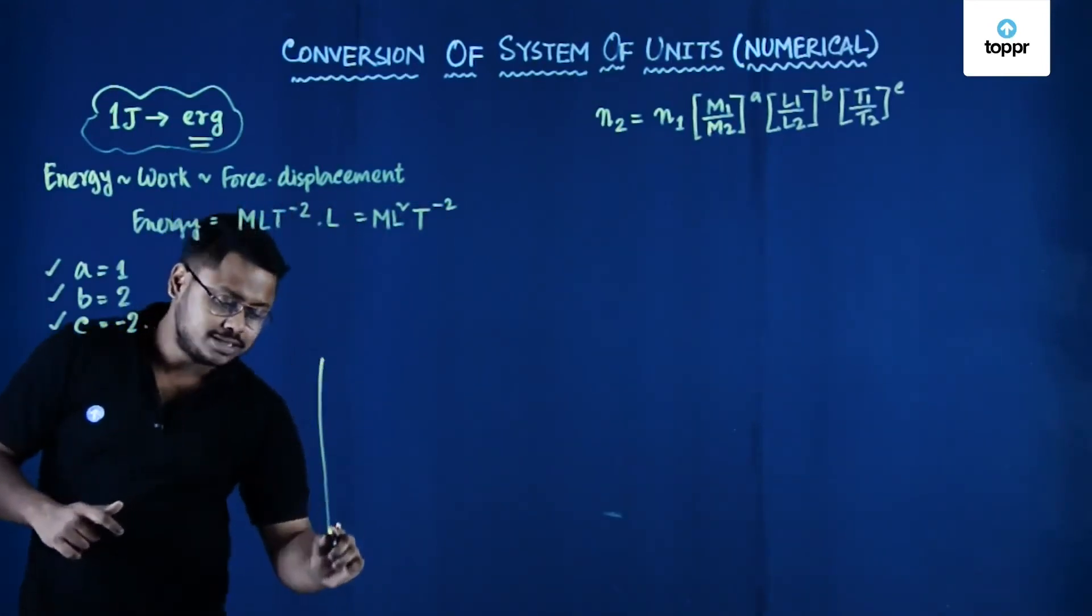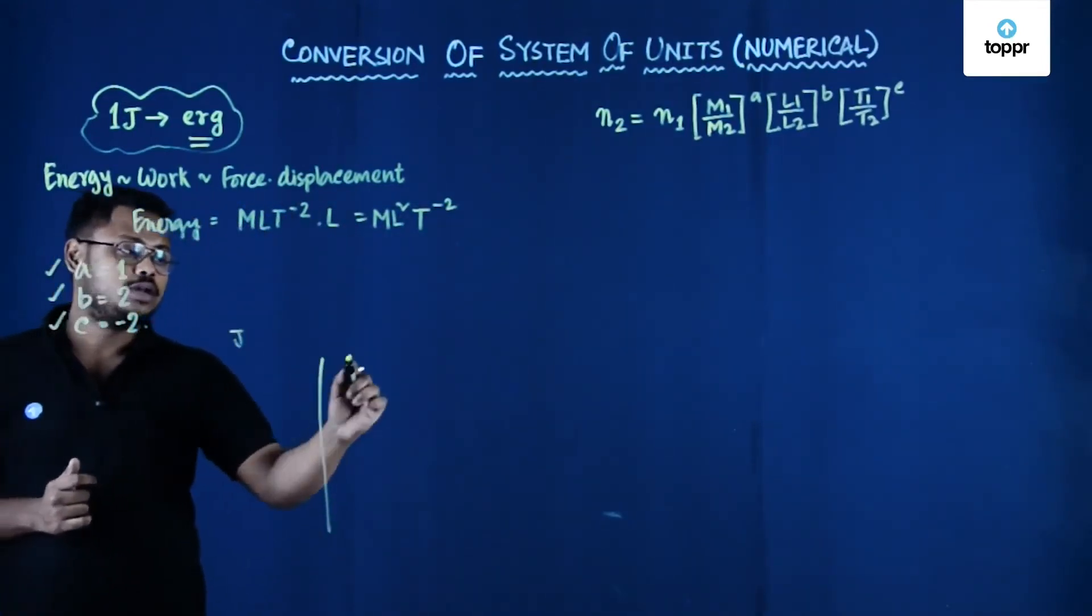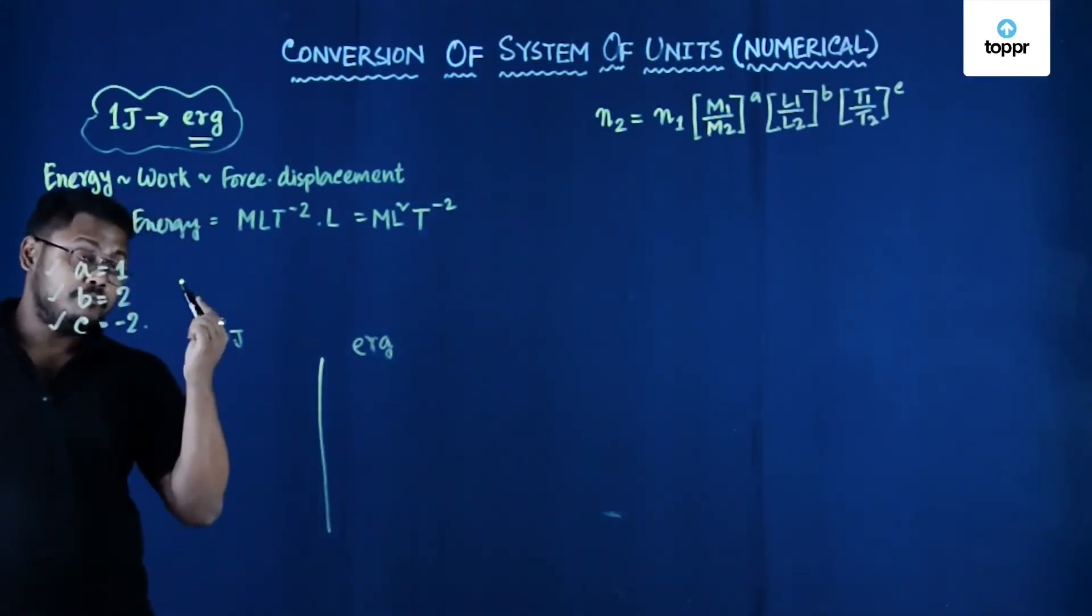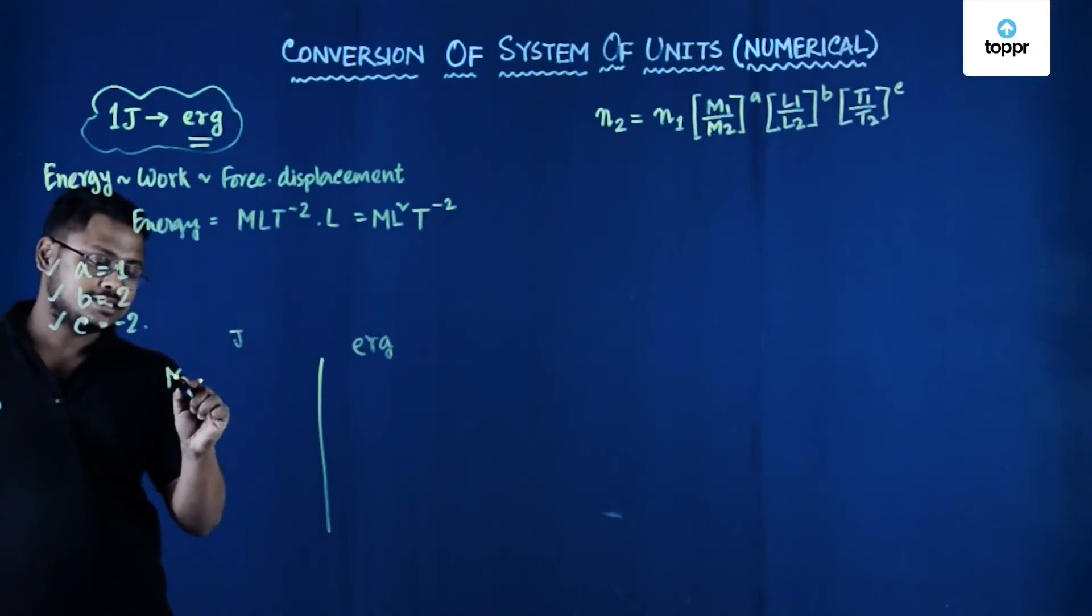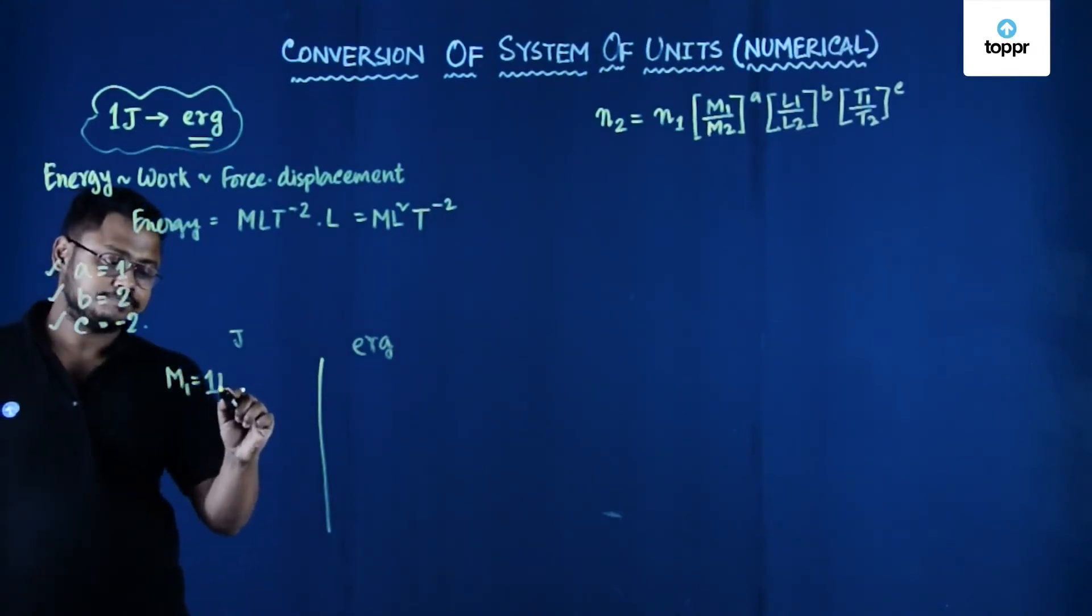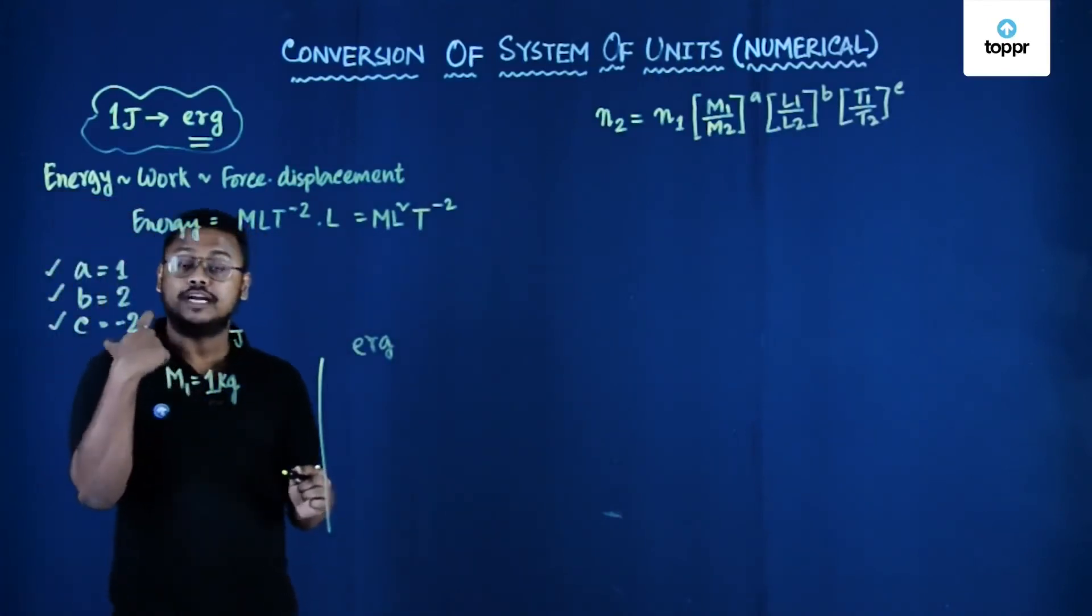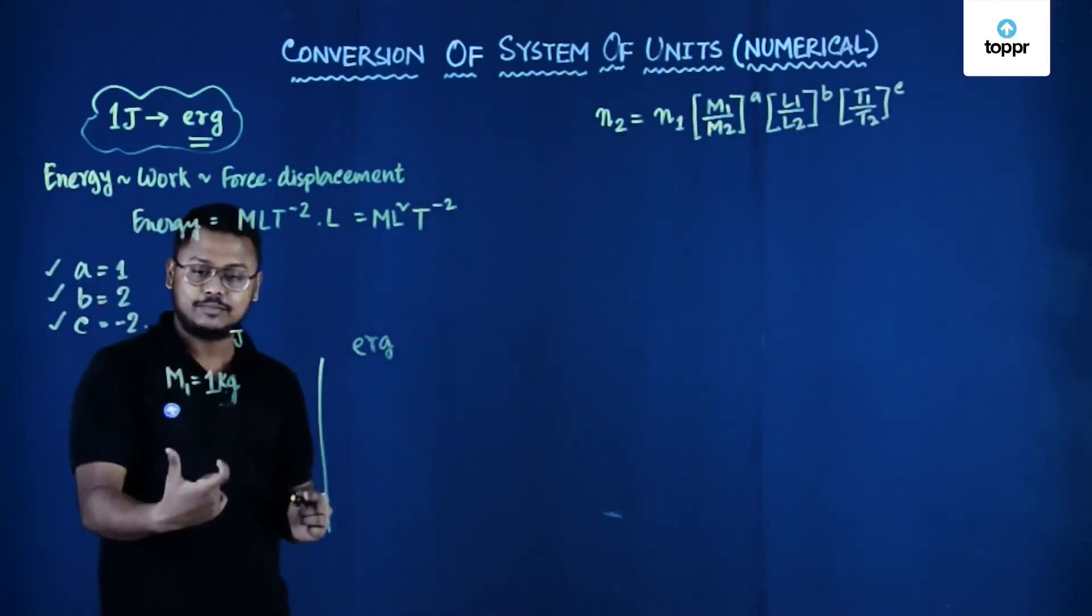So for the old system, let's say for joule and this is for erg that we want to find, the magnitude of mass is given as 1 kg. This is the magnitude of the fundamental unit in old system of unit.